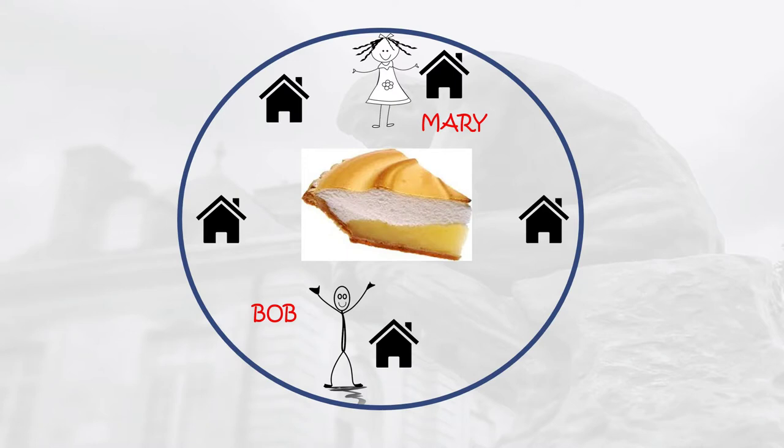Because Bob didn't particularly like Mary and thought she was a bit weird, he decided she was probably the person responsible, where in fact it turned out to have been a fox who'd stolen the pie. Had Bob applied ACH to his thinking, he may have arrived at the right conclusion a lot sooner.